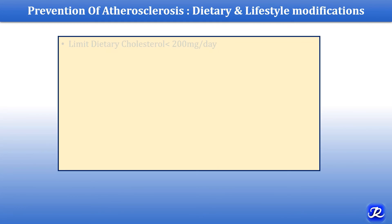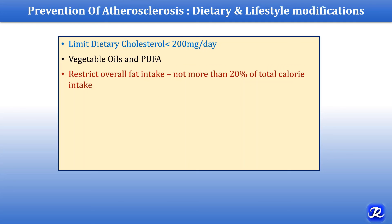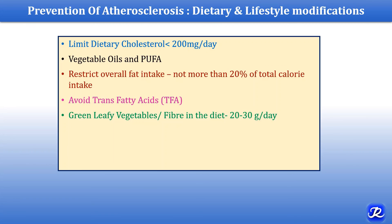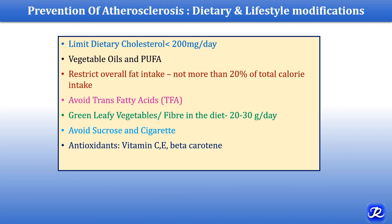Atherosclerosis can be prevented by dietary and lifestyle modifications. Dietary cholesterol intake should be limited to less than 200 mg per day. There should be more intake of vegetable oils and polyunsaturated fatty acids like omega-3 fatty acids. Saturated fatty acid intake should be lowered, and overall fat intake should not exceed 20% of total calorie intake. Trans fatty acids should be avoided. Green leafy vegetables and fiber (20–30 g/day) should be increased. Sucrose and cigarette smoking should be avoided. Antioxidants such as vitamins C, E, and beta-carotene are beneficial, and exercise should be done as it increases HDL cholesterol levels.